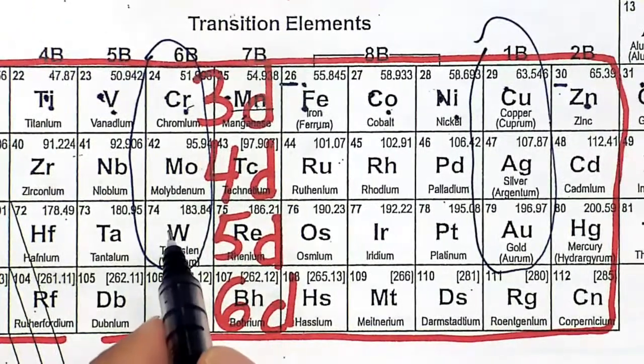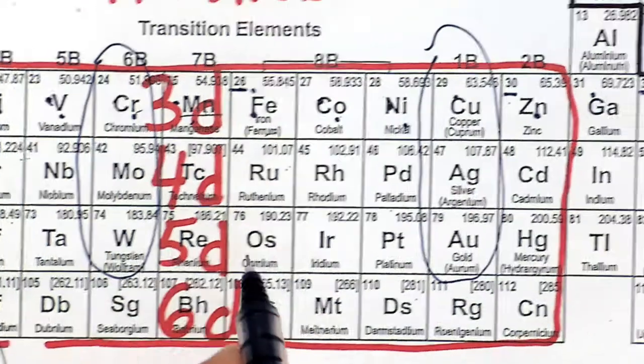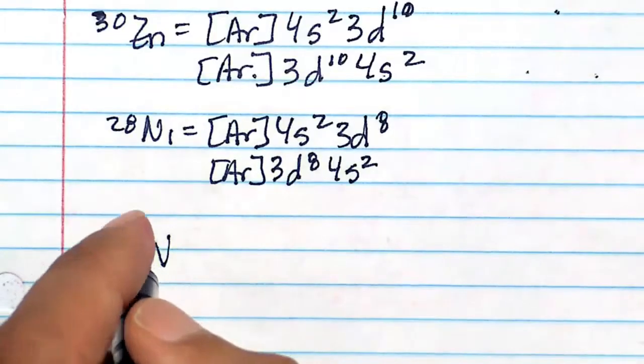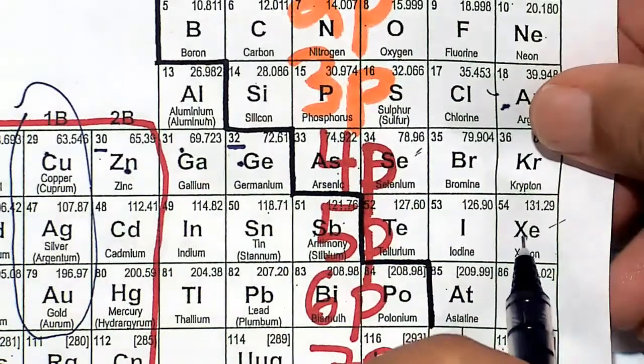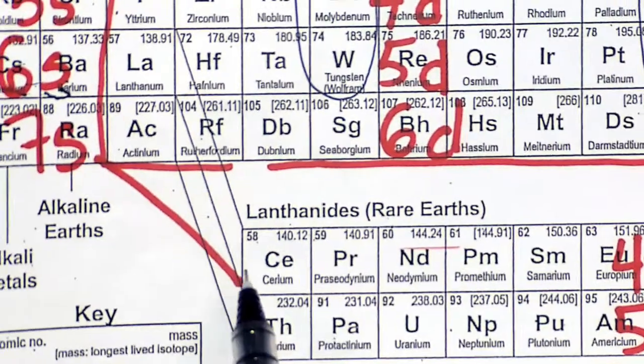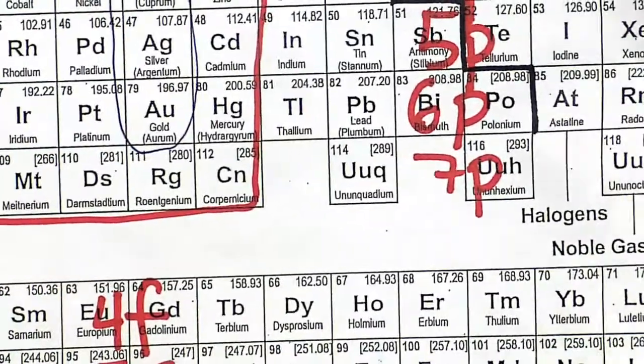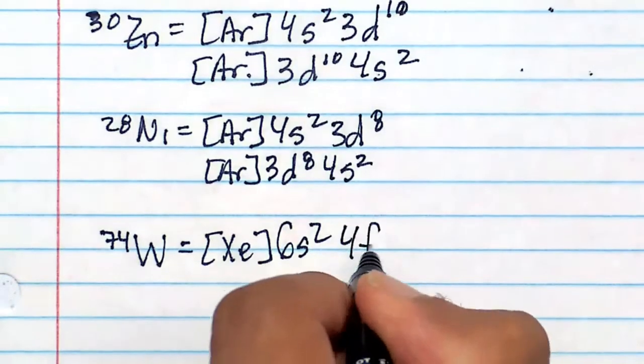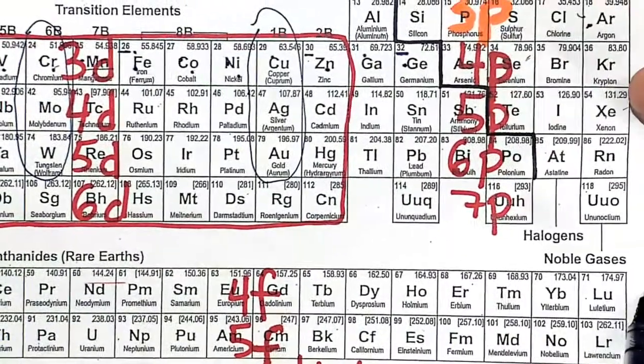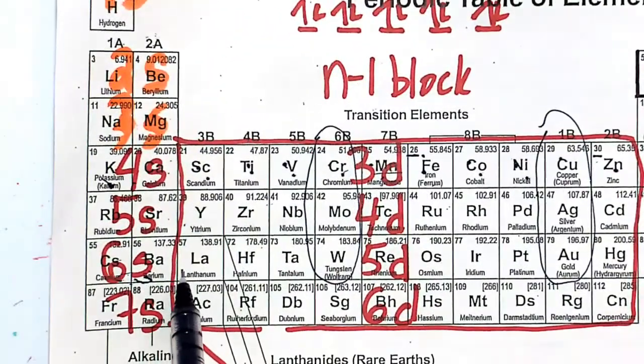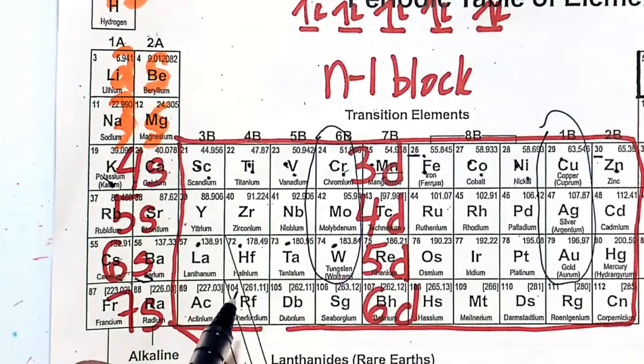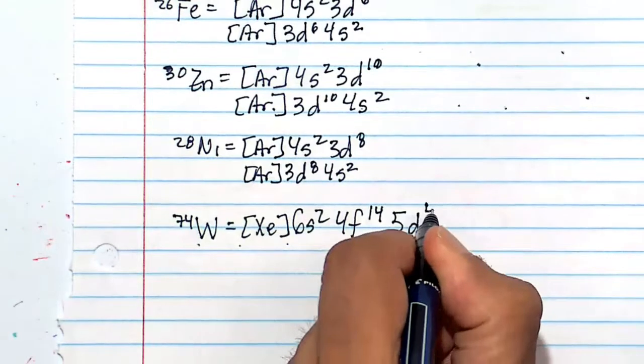Tungsten is 74. So 74, we will get 54 from xenon. After xenon, we go to 6s2. After 6s2, be careful now, we take a detour, and we fill up all of 4f. 4f is 4f14 because there's 14 electrons that go into the f orbital. After 6s2, we fill up all of the 14. Then we come back to 5d, and it's going to be 5d4, but it's actually not 5d4.